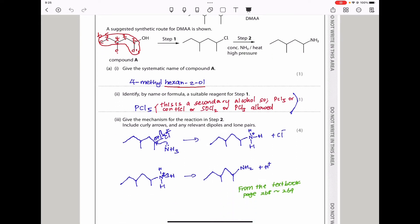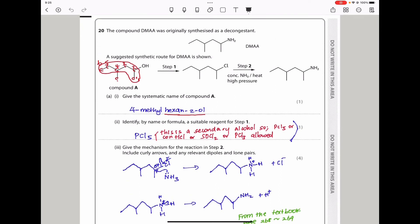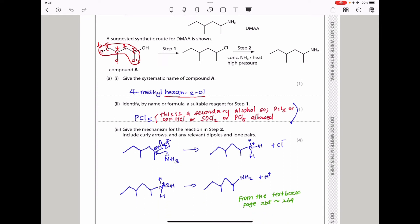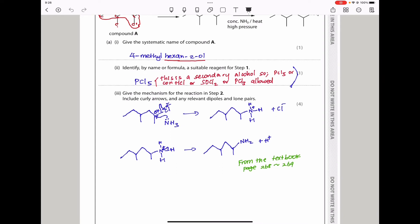The next part says identify by name or formula a suitable reagent for step 1. Because step 1 involves converting an alcohol into a haloalkane, we can use PCl5, phosphorus pentachloride.